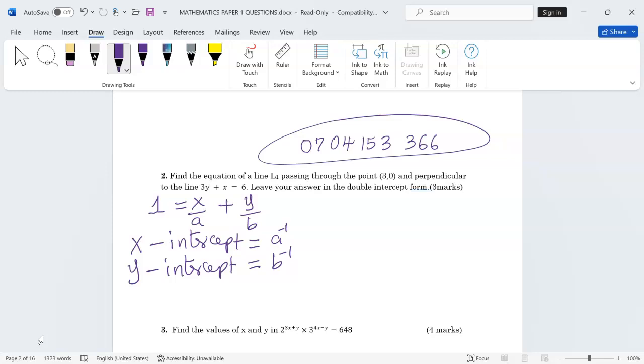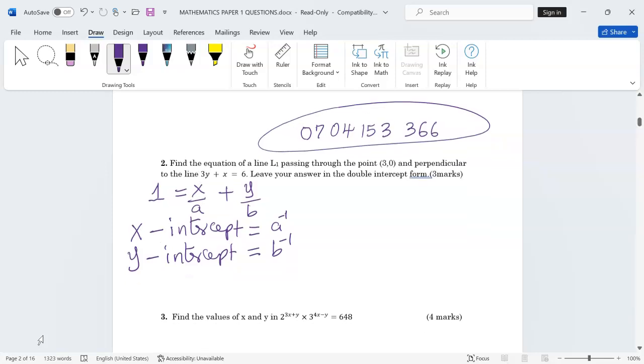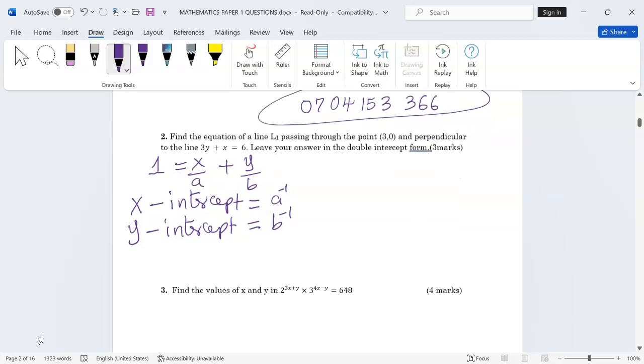Let's work on the question now. We want the equation of a line perpendicular to the provided line. Let me arrange it first in the general form y = mx + c so that I'll be able to get the gradient. So 3y is equivalent to -x + 6.